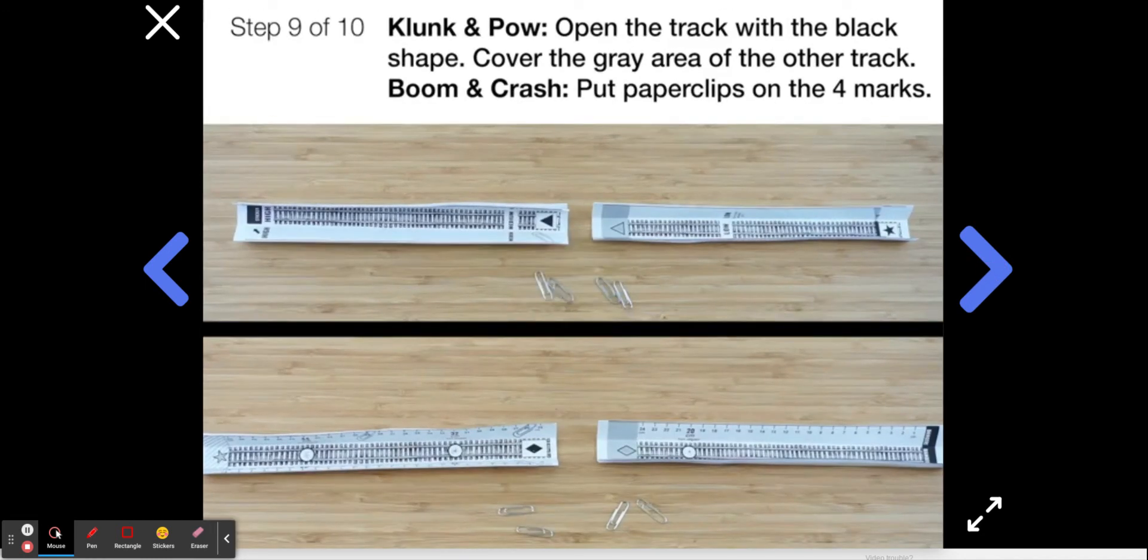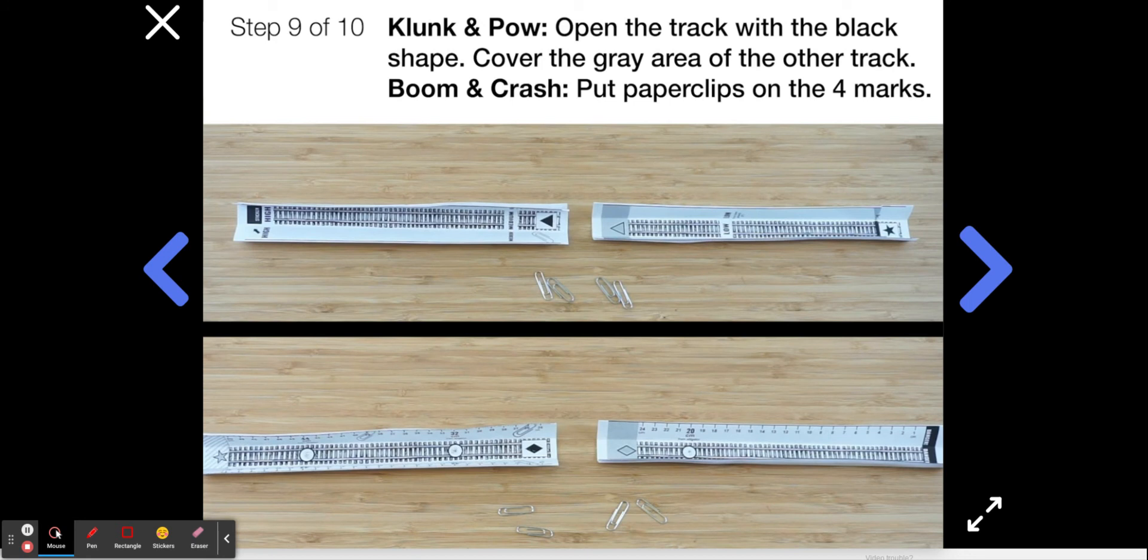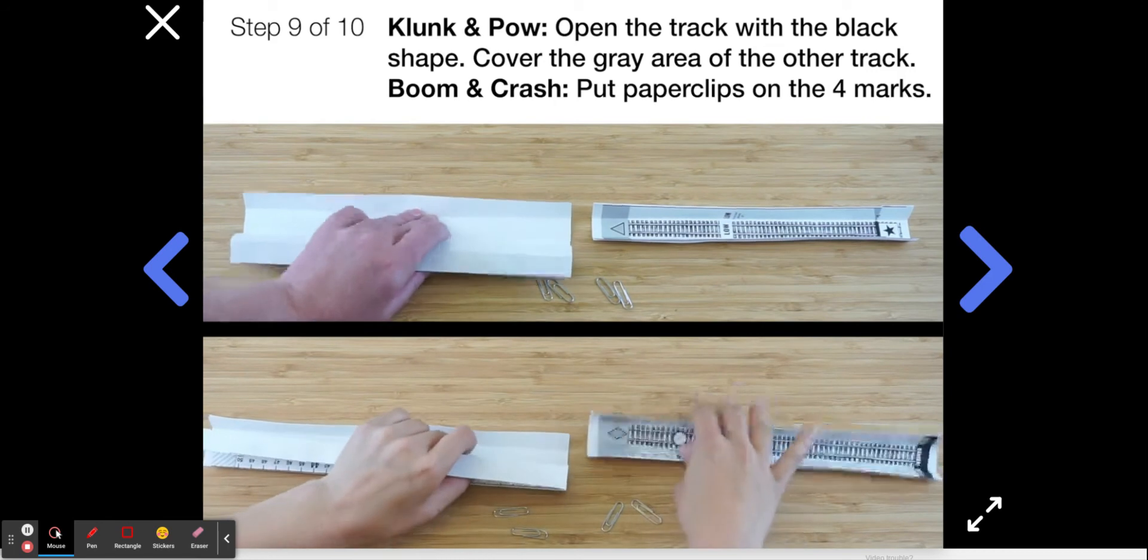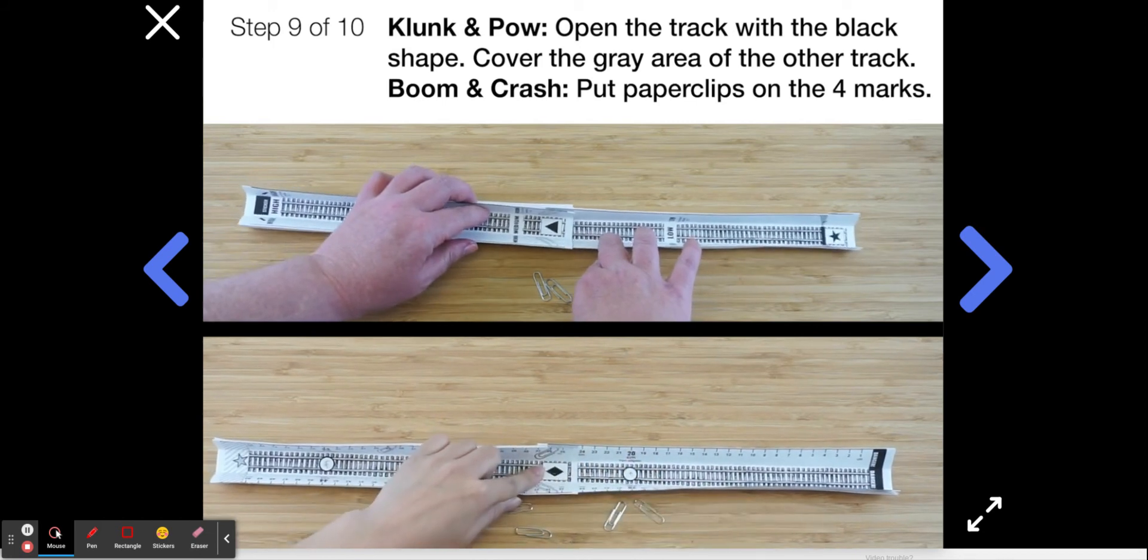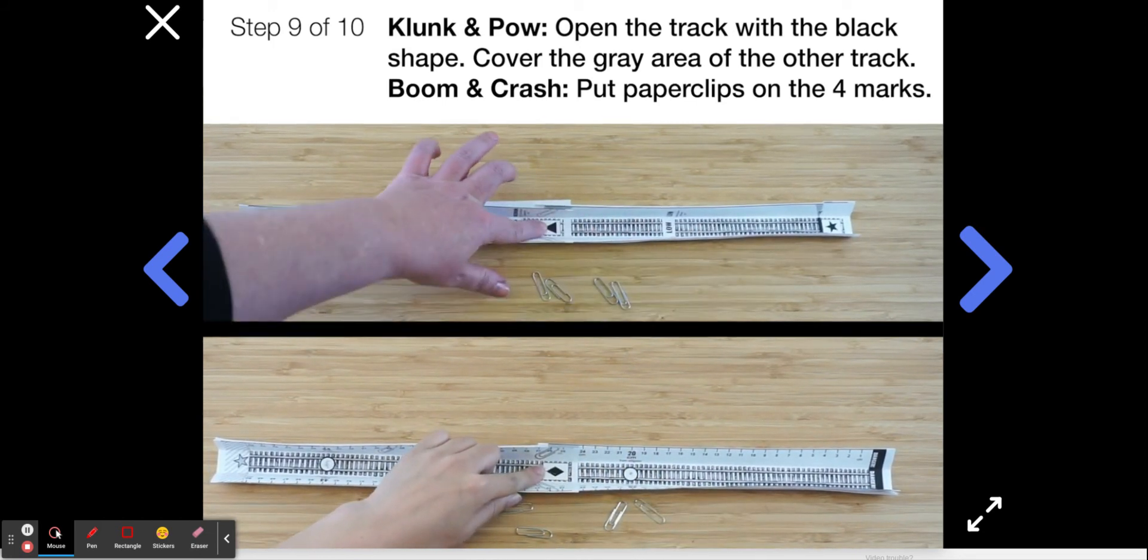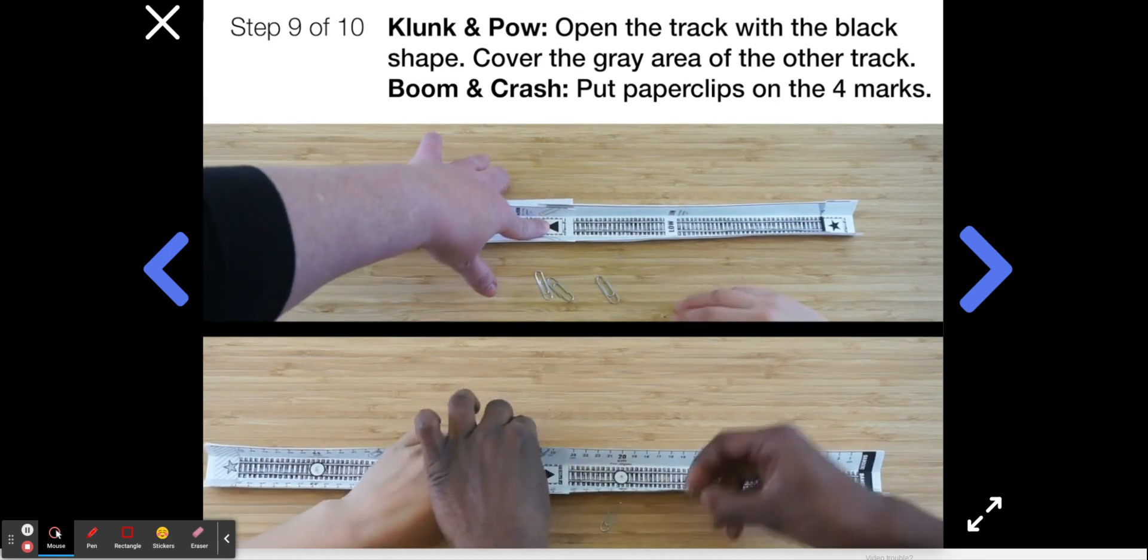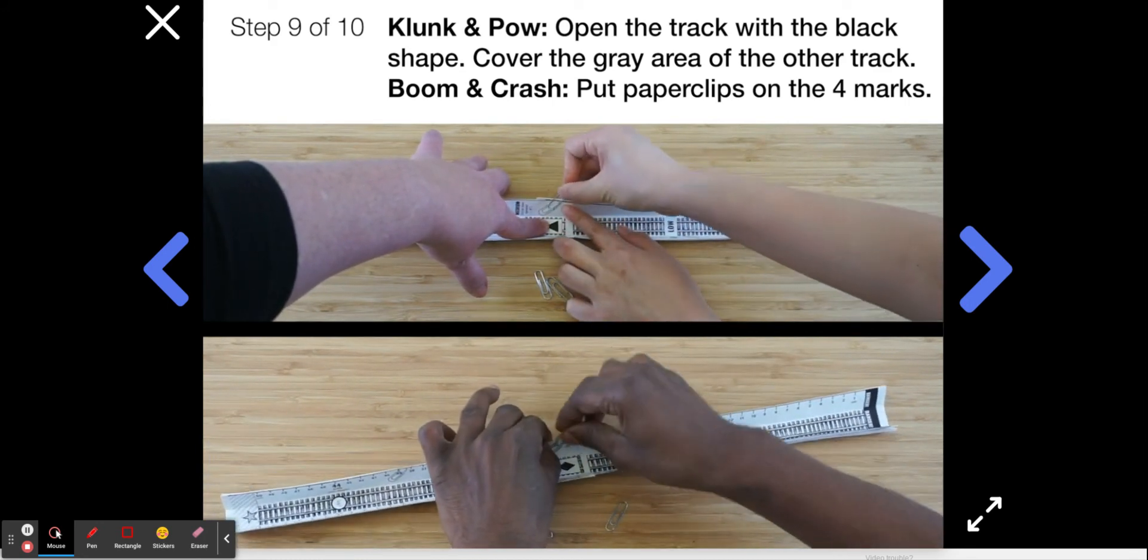Okay, now we're going to connect the tracks. Clunk and pow, each of you find the track pieces that have the solid black shape. Clunk, yours is the solid black triangle. Pow, yours is the solid black diamond. Open these track pieces up like this. Then slide in the other track that has the same shape. But as you do this, only slide it until you cover up the gray area, like this. Boom and crash, while clunk and pow hold the connected pieces together, you're going to add each of the four paperclips to the tracks. To connect the track, you'll want to slide each paperclip over the paperclip marks, like this.